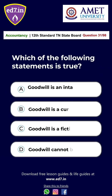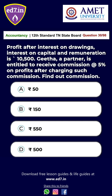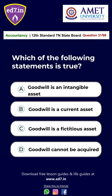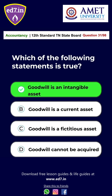Question No. 31: Which of the following statements is true? Option A: Goodwill is an intangible asset. Option B: Goodwill is a current asset. Option C: Goodwill is a fictitious asset. Option D: Goodwill cannot be acquired. The answer is Option A — Goodwill is an intangible asset.